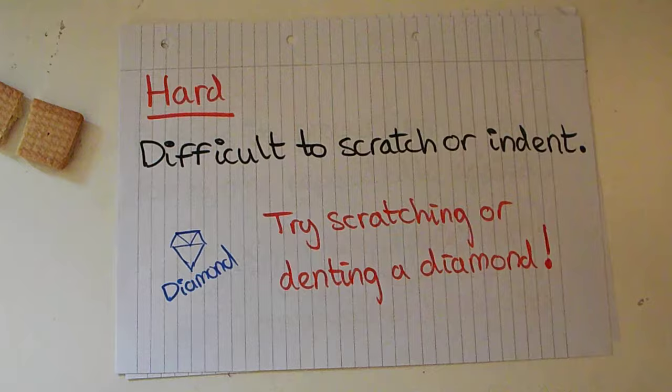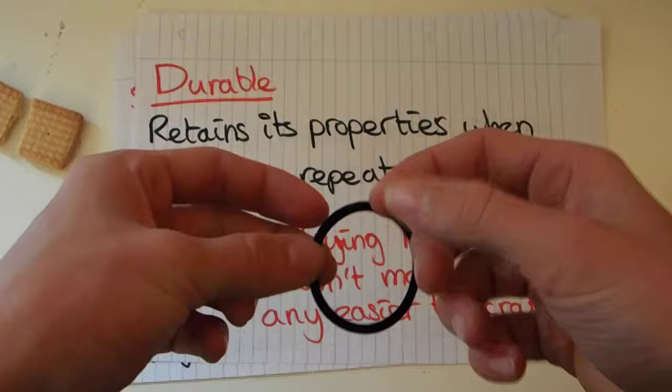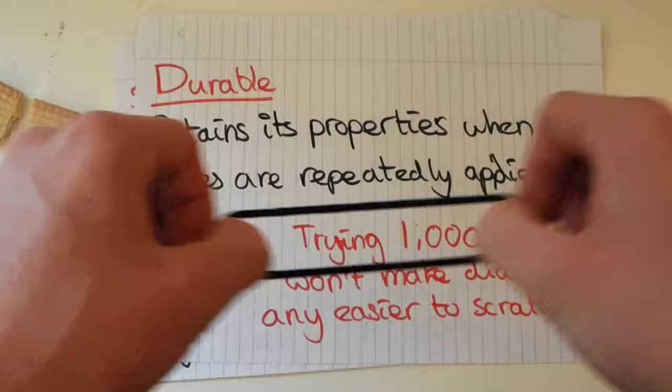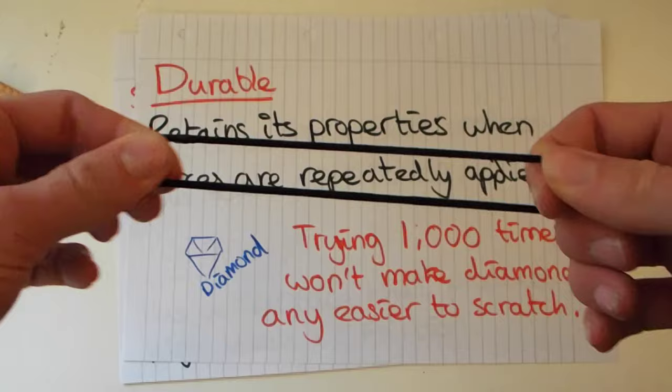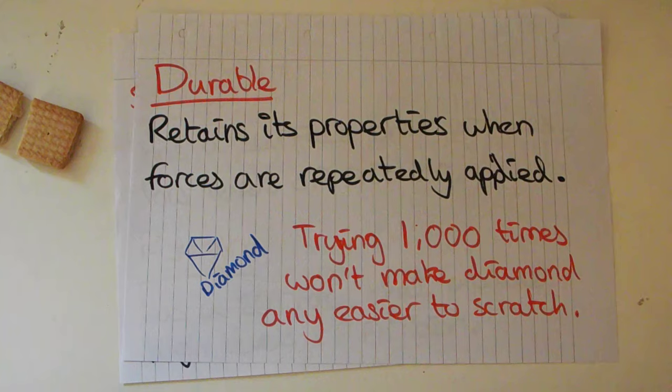Something durable retains all of these properties over time. This hairband is reasonably durable because if I stretch it over and over again it will eventually deteriorate, but for the most part it's going to stay quite elastic and retain its property of elasticity. A diamond is the same — if you hit it with a hammer a thousand times, the thousand-and-first time isn't going to change anything, because the diamond is still hard. It retains its properties after a lot of forces have been applied.